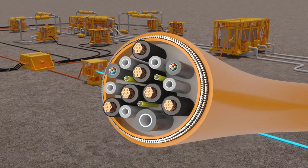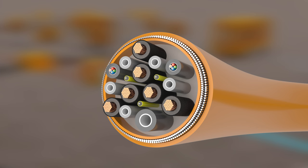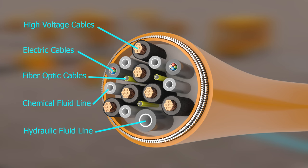Inside the umbilical, there are several components that serve different functions. High voltage cables, electric cables, fiber optic cables, chemical fluid lines, and a hydraulic fluid line.